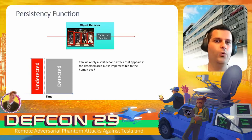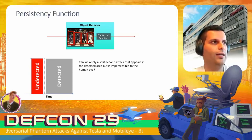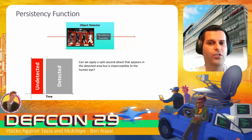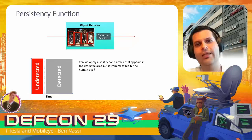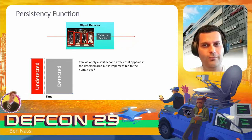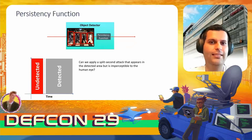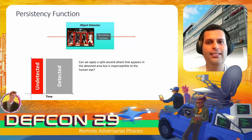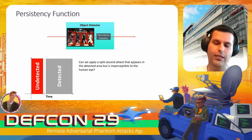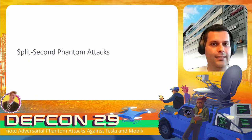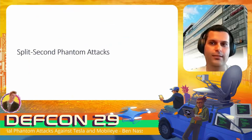This leads to the key question motivating the split-second phantom attack: can we apply an attack using a phantom that appears in the detected area but remains imperceptible to the human eye? This takes us to the next section on split-second phantom attacks.